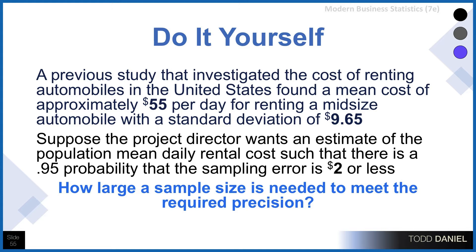So suppose that we want to estimate a population mean daily rental cost such that there is a .95 probability that the sampling error is $2 or less. And the question is, how large a sample size is needed to meet this required precision?